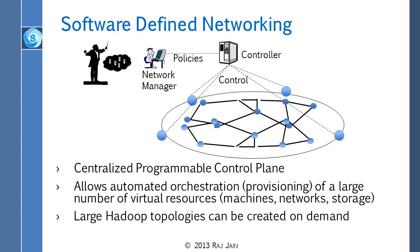All that is the control plane. In SDN, they said we just don't need to do it in every router and every switch — we can take all the control plane and put it into one computer. So there is a controller which gets the connectivity information from everybody, finds out what the shortest path is, makes routing tables for everyone, and sends them out. There is a central controller which does all the routing table construction. The switches just do the data plane, so because they don't need a very powerful CPU now, they can be cheaper.